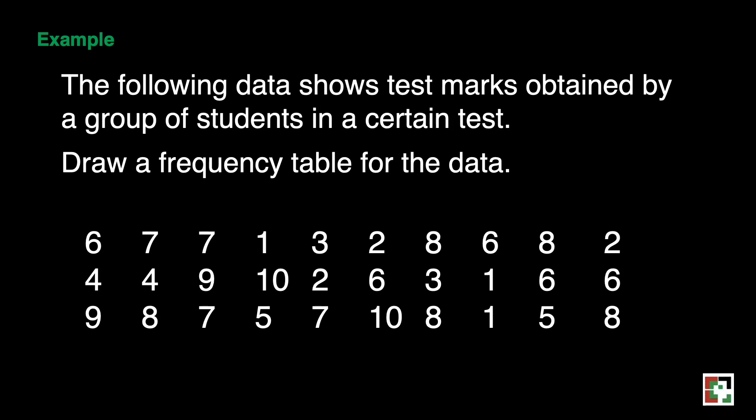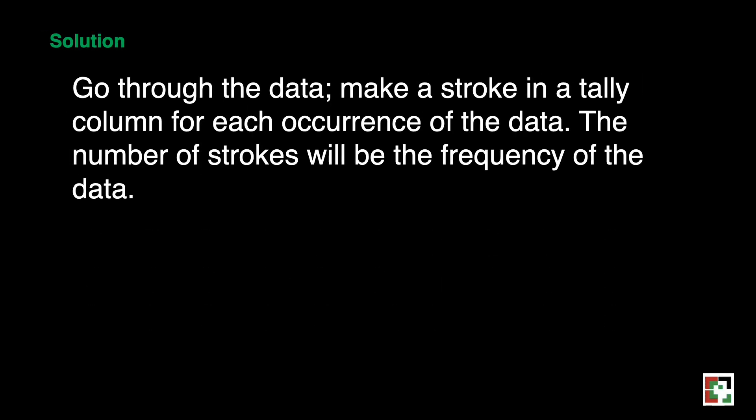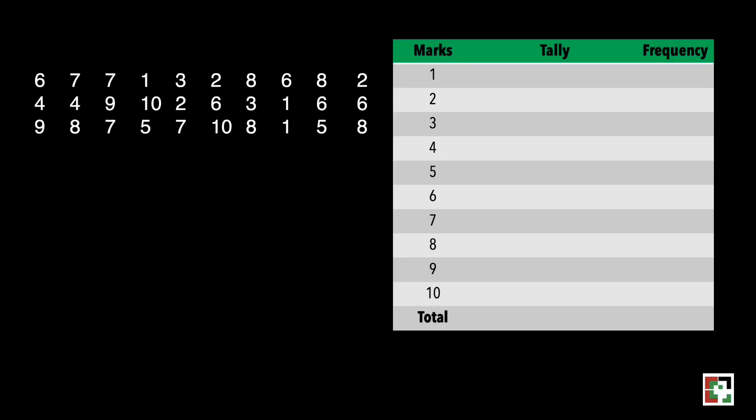Example: the following data shows test marks obtained by a group of students in a certain test. Draw a frequency table for the data. We have the following test scores. Go through the data and make a stroke in the tally column for each occurrence of the data. The number of strokes will be the frequency of the data. So, we'll start doing the tallying.